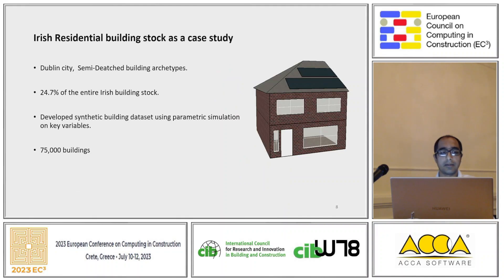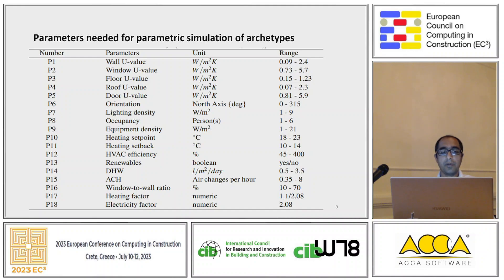For the case study, we applied our methodology to Irish buildings — specifically Dublin city, using semi-detached building archetypes, which represent more than 24% of the entire Irish building stock. We developed synthetic data of around 75,000 buildings using 18 key parameters including building U-values, orientation, densities, number of occupants, renewables, window-to-wall ratio, and energy and electricity factors. The input ranges were derived from EPC (Energy Performance Certificate) data available in Ireland.